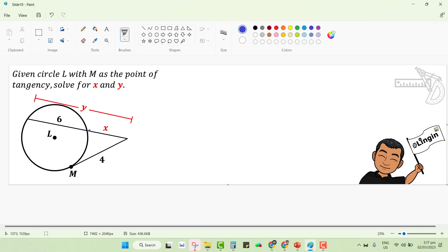x refers to this segment from this point on the circle towards the exterior point here. And y refers to the entire second segment from this point to the same exterior point. If we can solve x, then definitely the value of it together with 6 corresponds to y and we could solve y already.